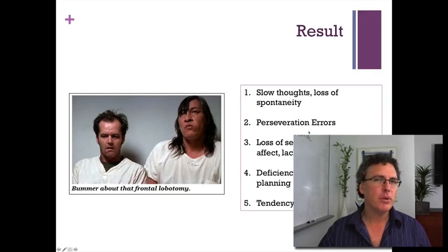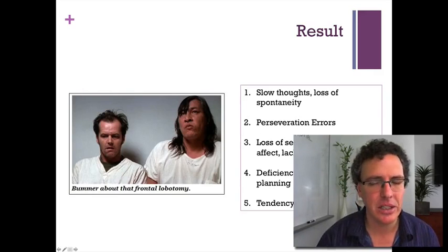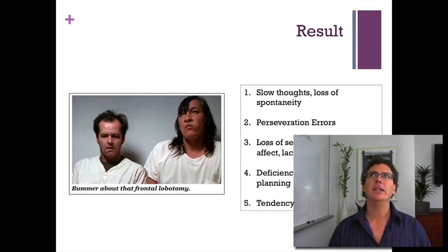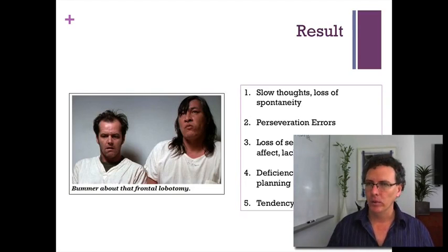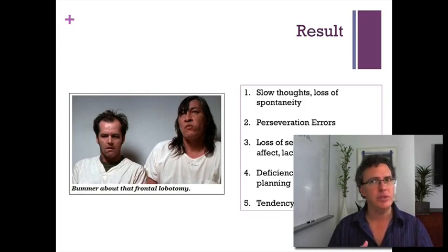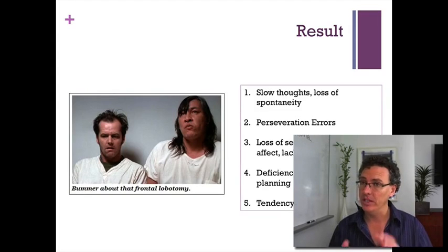They show what are called perseveration errors. A perseveration error means that if you're engaged in some behavior that's working for a while but then suddenly it stops working, you need to understand that the behavior doesn't work anymore and shift your strategy. People with frontal lobotomies cannot seem to do that.